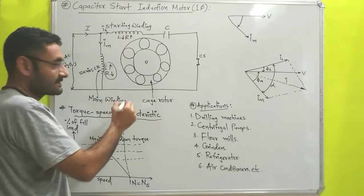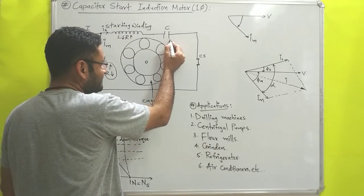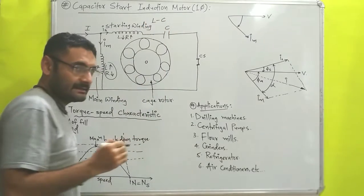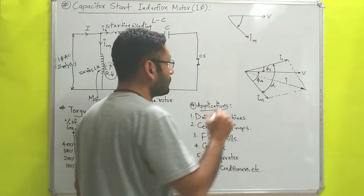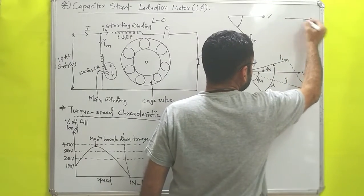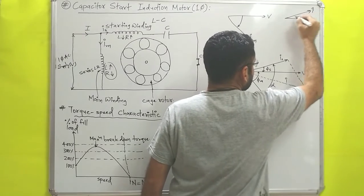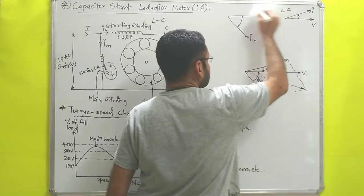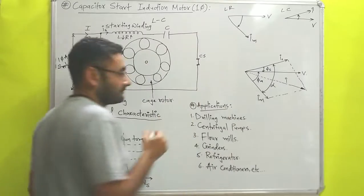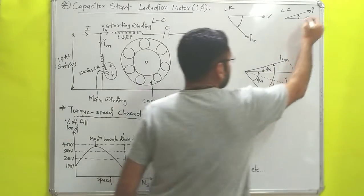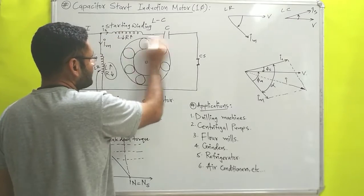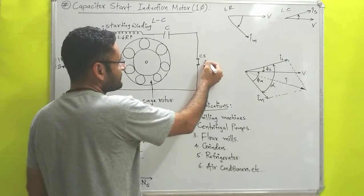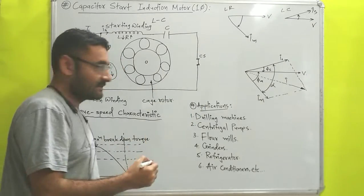The starting winding is designed with low inductance and high resistance, and it is connected in series with a capacitor. That entire branch forms a series LC circuit. For a series LC circuit, the current leads the potential by some phase angle. So Is is the current flowing from this series LC circuit, and it leads the supply voltage.